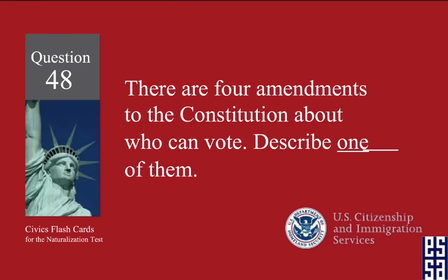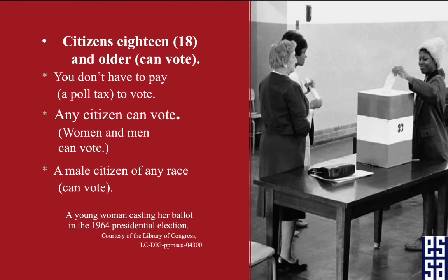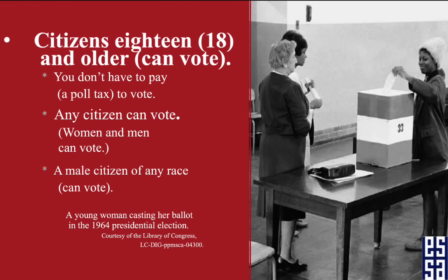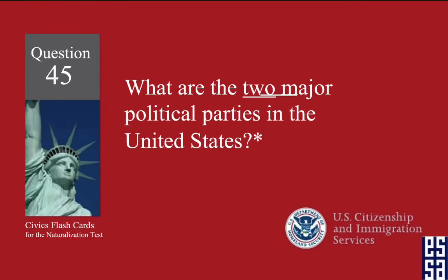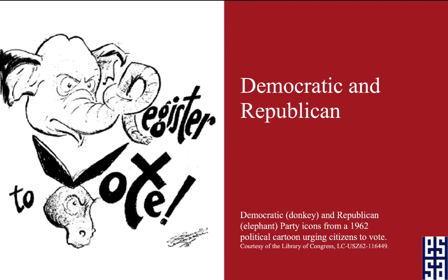There are four amendments to the Constitution about who can vote — describe one of them. Citizens 18 and older can vote. What are the two major political parties in the United States? The Democratic and Republican parties.